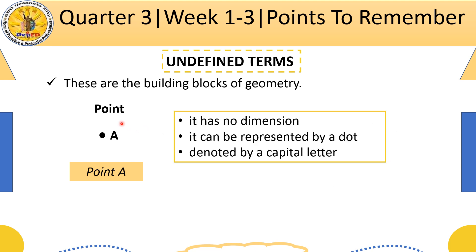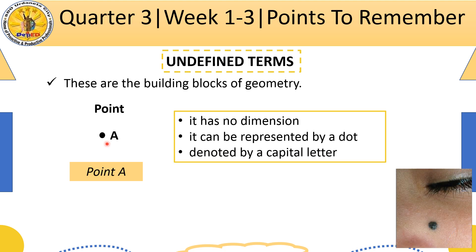The first undefined term is the point. A point has no dimension — meaning it has no length, no width, or height. It can be represented by a dot, similar to a mole on your body. It is denoted by a capital letter. So here, our point is named as point A.